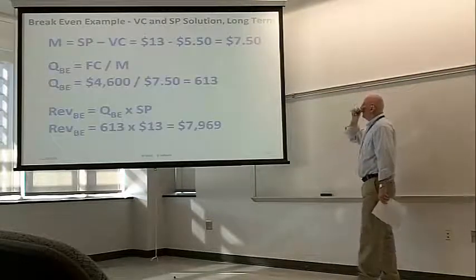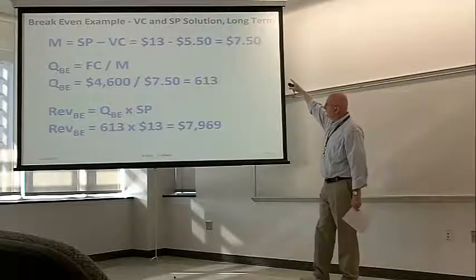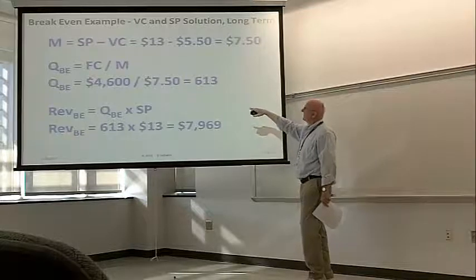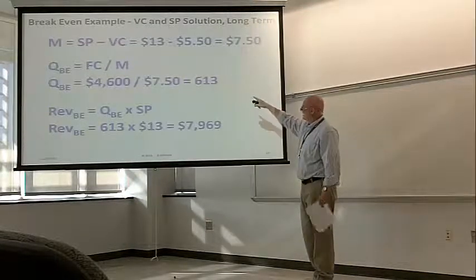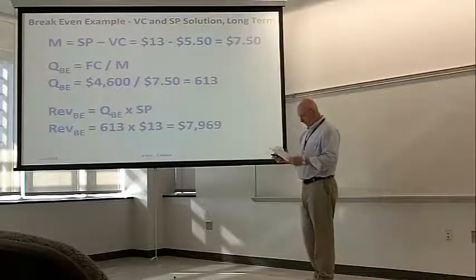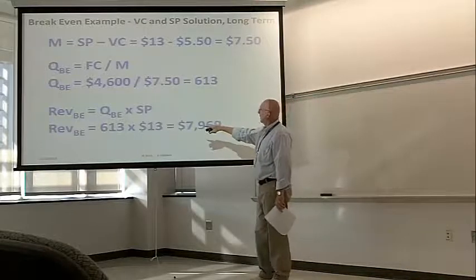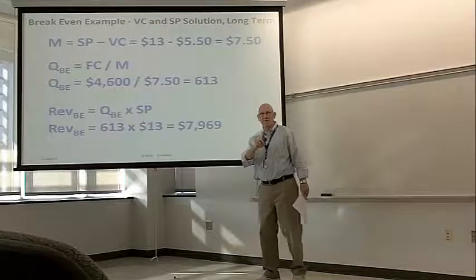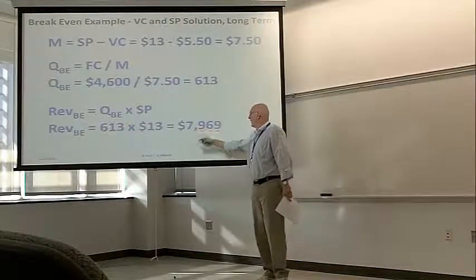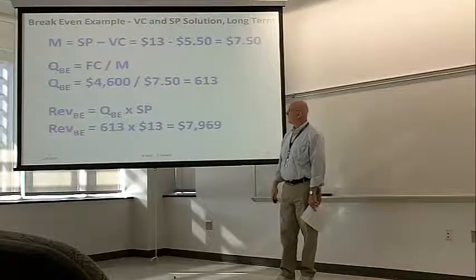So, the margin, $13 minus $5.50, $7.50. The breakeven quantity, those fixed costs, divided by the margin, comes out to 613. Check the revenue, 613 times the selling price, not the margin, be careful about that. 613 times $13 is $7,969 breakeven revenue.